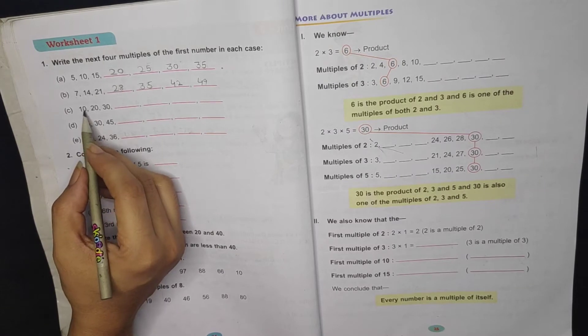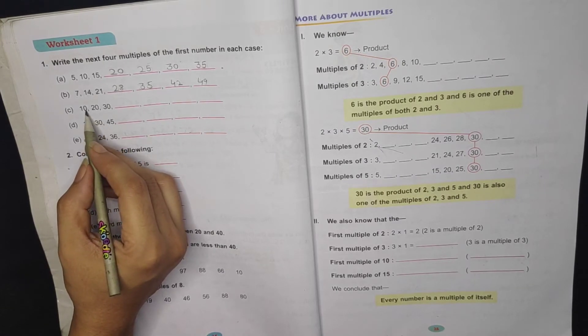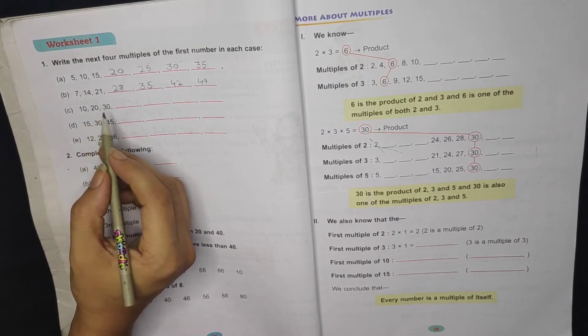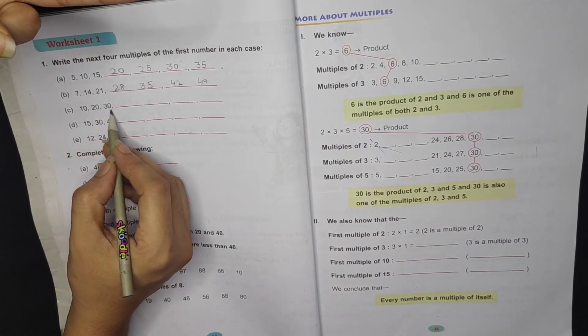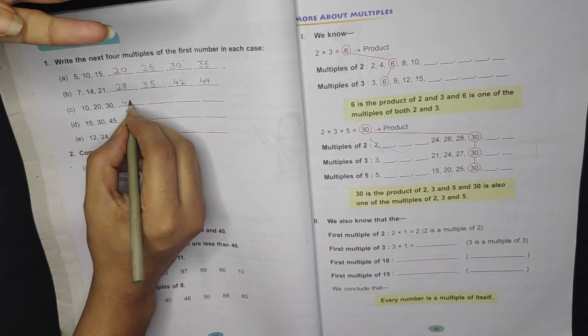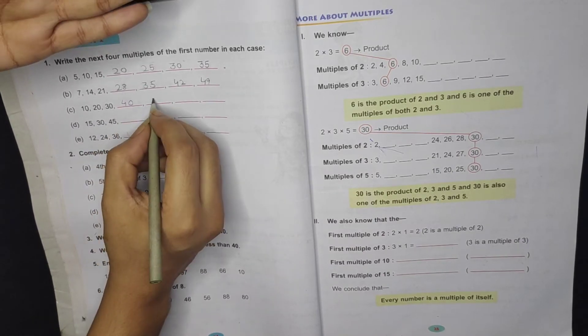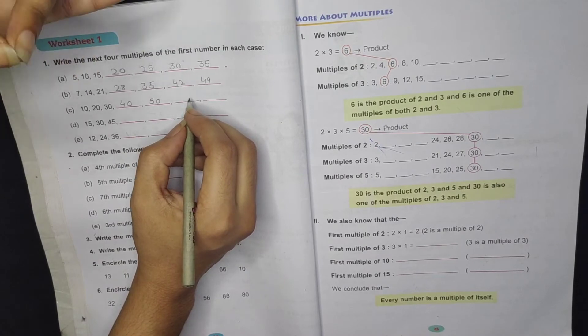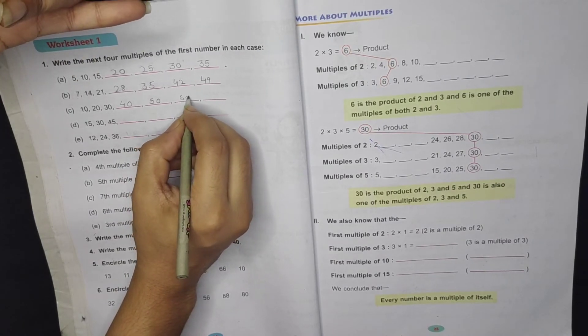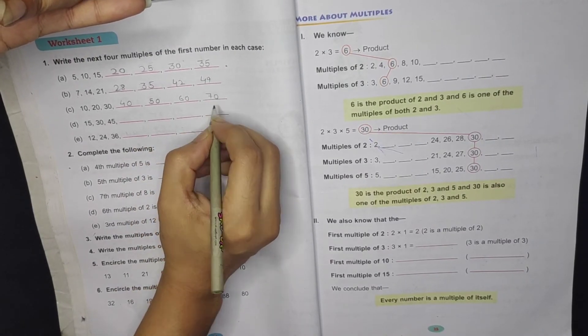Now 10. Look, 10 multiply. 1 time is 10, 2 times 10 is 20, then 3 times 10 is 30. So 4 times 10 will be 40, 5 times 10 will be 50, then 6 times 10 will be 60, then 7 times 10 will be 70.